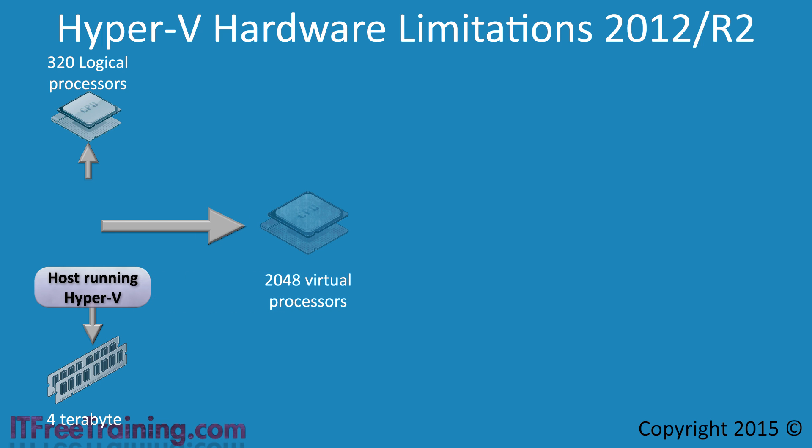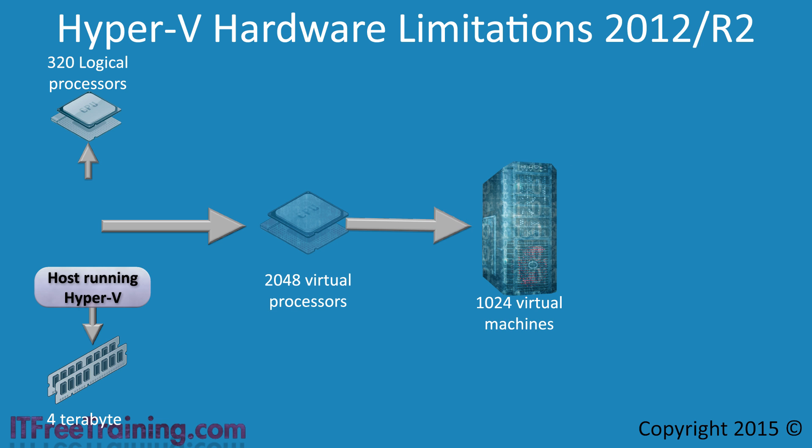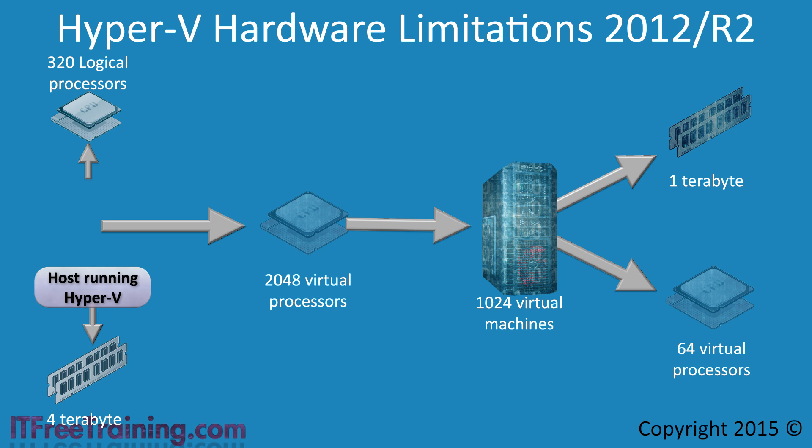The next limitation is 2048 virtual processors. A virtual processor is seen by the virtual machine just like a physical CPU would be seen by a physical computer. These virtual processors are then assigned to virtual machines, of which Hyper-V can support 1024 of them. The virtual machines are limited to 1TB of RAM and 64 virtual processors. You can see that even though there are limitations, the limits are very high and should not cause any problem to the average administrator.